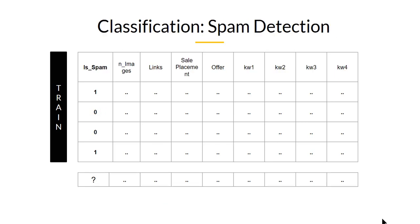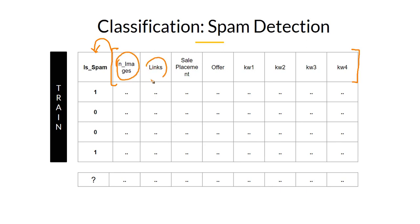This brings us to the next type of problem: classification. The problem setting for a classification problem is very similar to a regression problem. Here also you have a training data set with different features available to predict a categorical variable. This data set represents spam detection data — you have various information such as the number of images in your email, number of links, whether a sales placement or offer is present, and the presence of various spam keywords in the email.